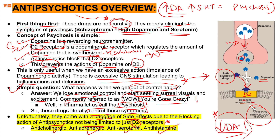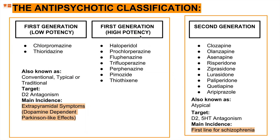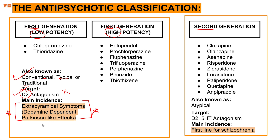Let's classify antipsychotics. First generation drugs, also known as conventional, typical, or traditional antipsychotics, have two sections: low potency and high potency. Their primary target is the D2 receptor, which they block. However, they produce what are known as extrapyramidal symptoms, which are dopamine-dependent Parkinson-like effects — a concept we will explain in more detail shortly.